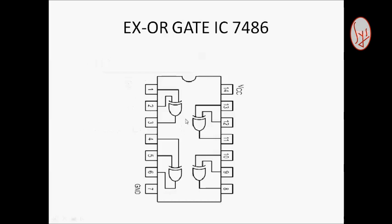Pin diagram of 7486 XOR gate. This is a 14 pin IC. Pin number 7 connects as ground. Pin number 14 connects as VCC.